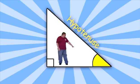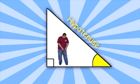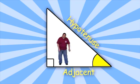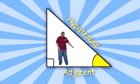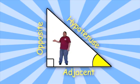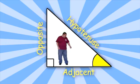Now let's talk about the yellow angle. This side is next to the yellow angle, which makes this side adjacent to the yellow angle. This side is still the hypotenuse, so that makes this side opposite to the yellow angle.